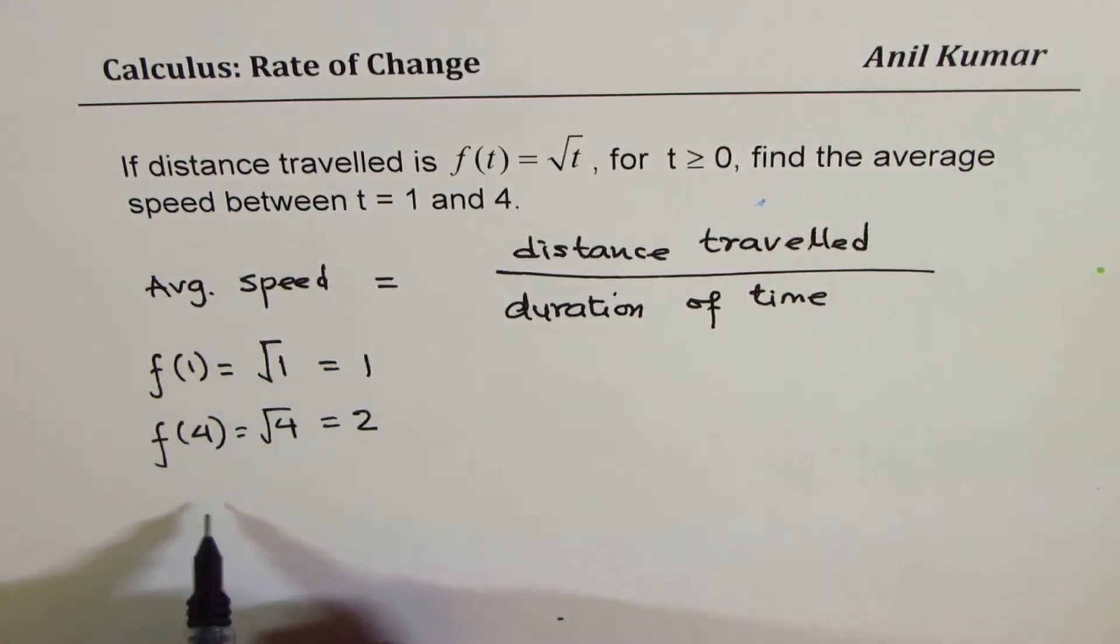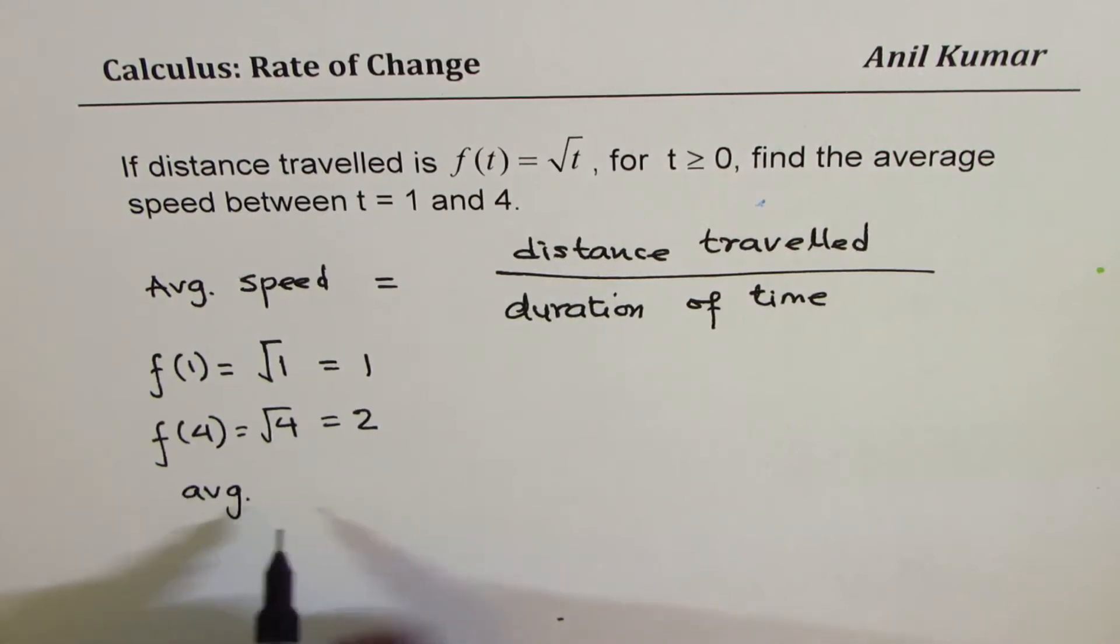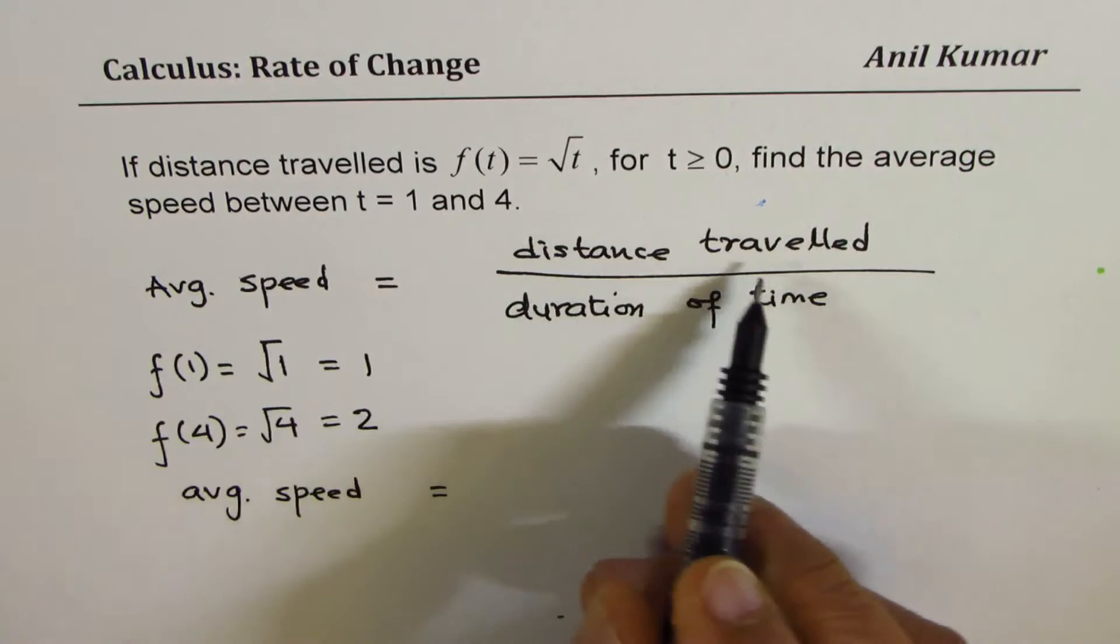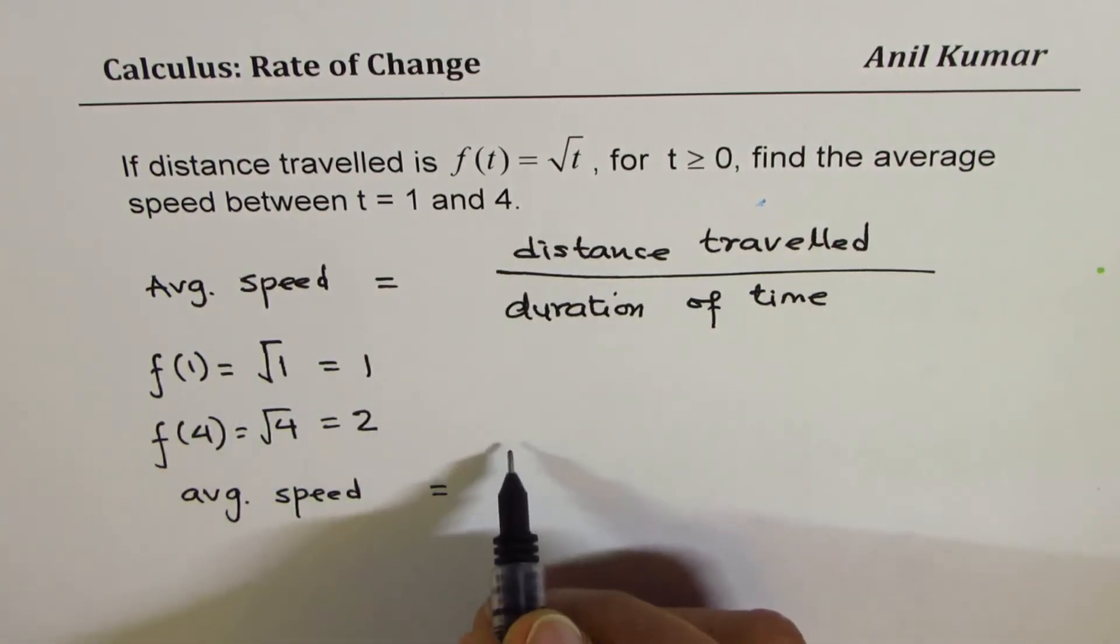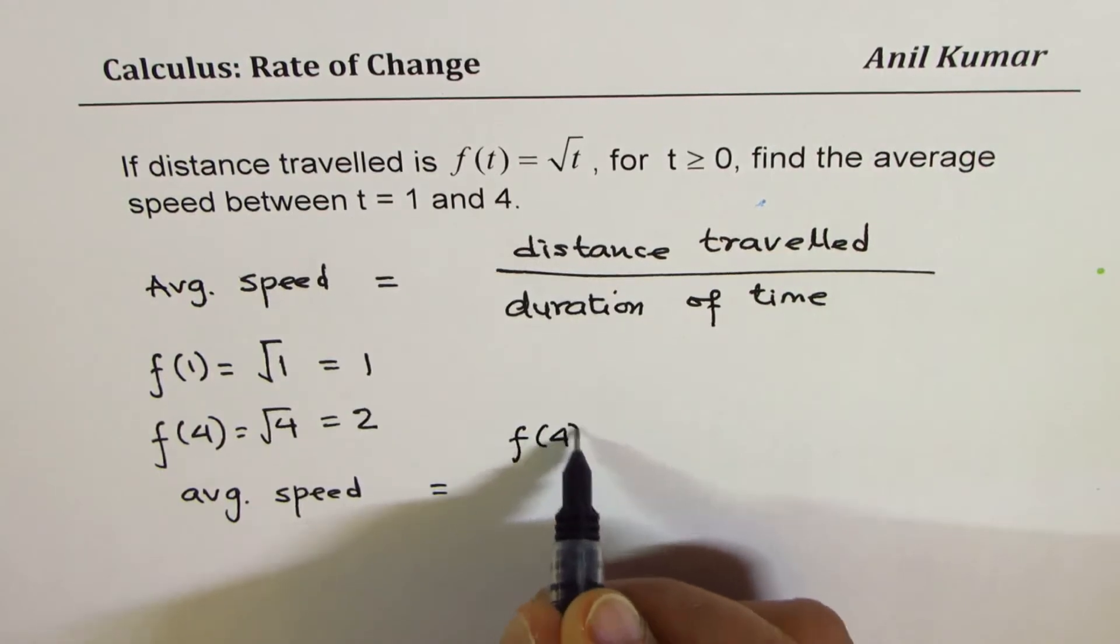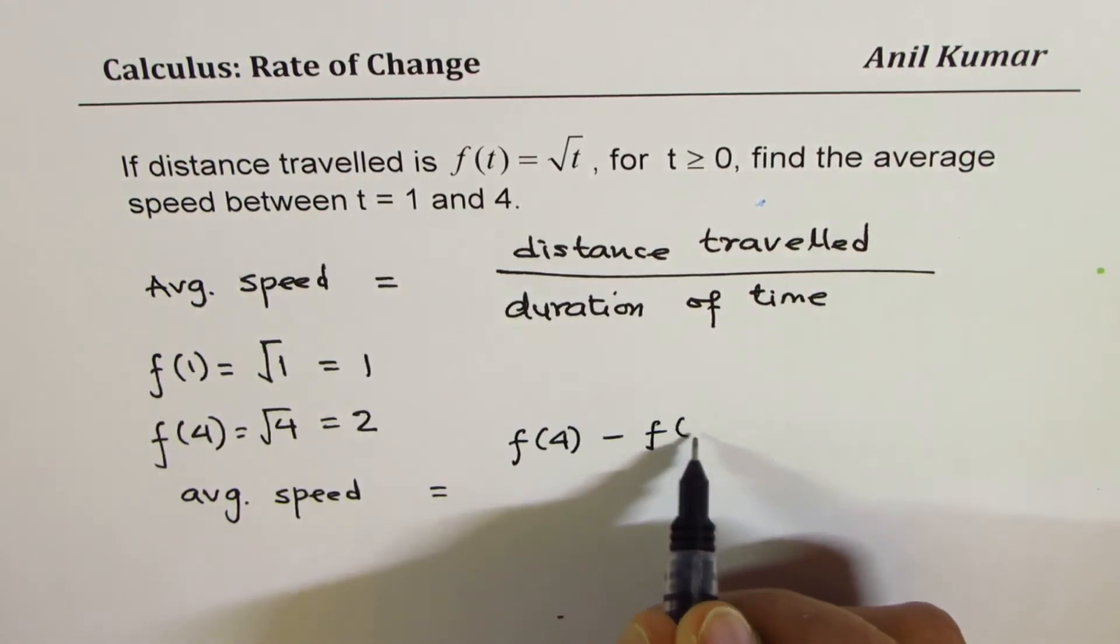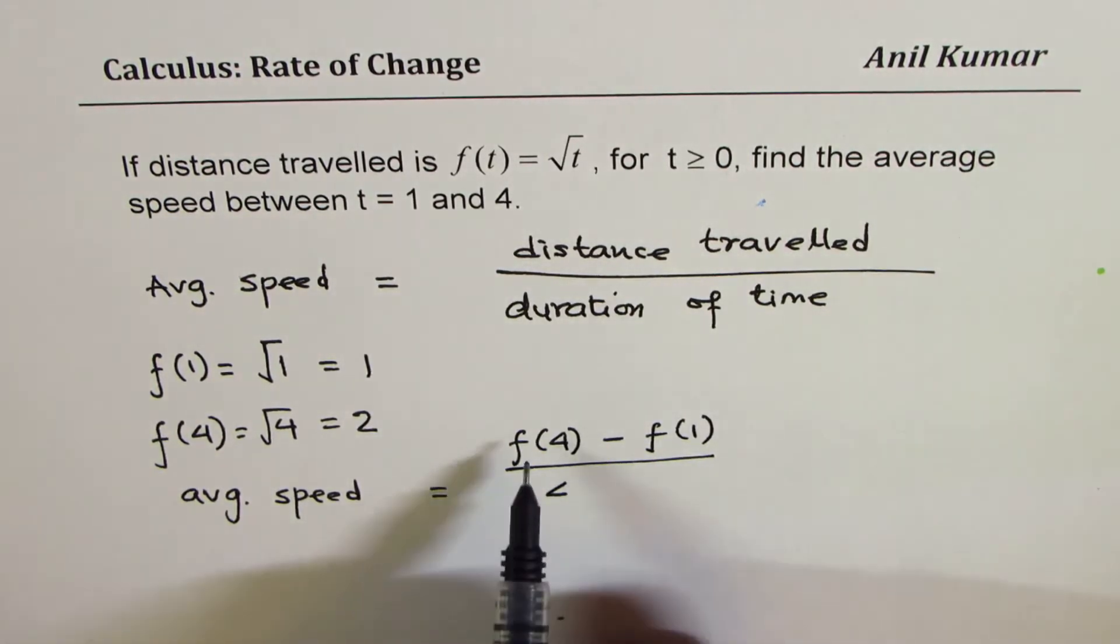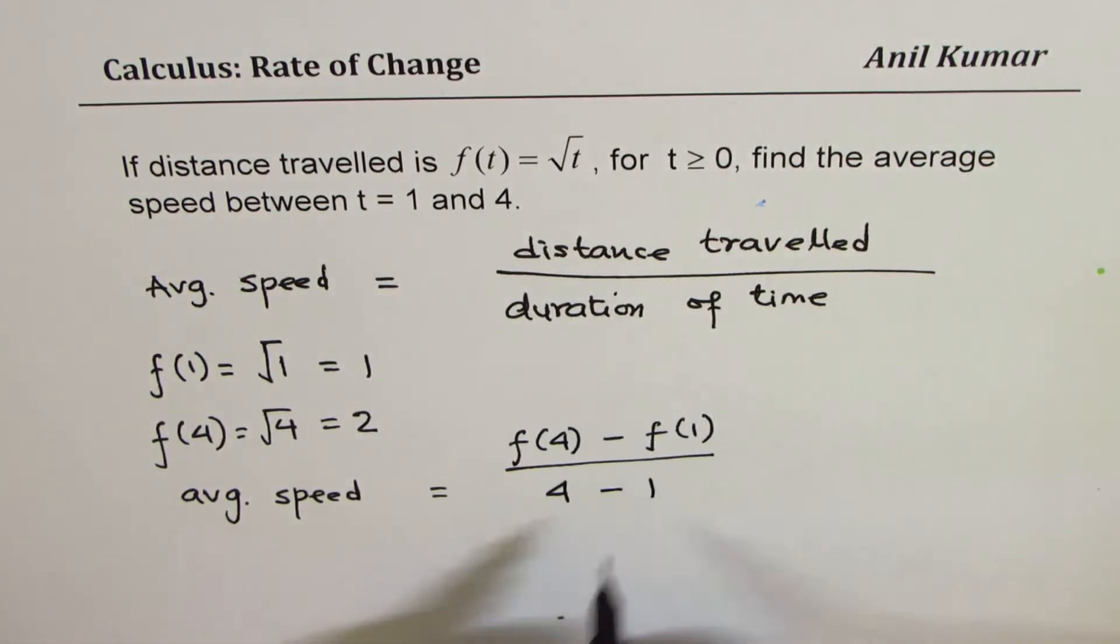From here, we can get average speed. Average speed equals distance travelled, which is f(4) - f(1), divided by time taken, 4 - 1.